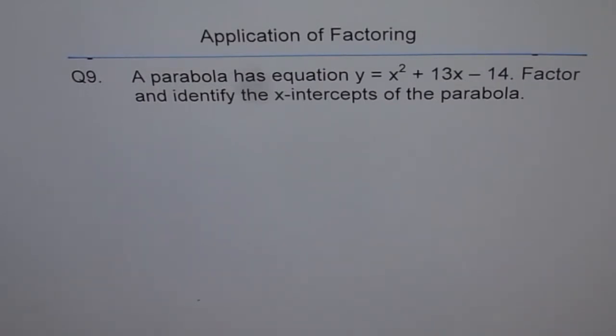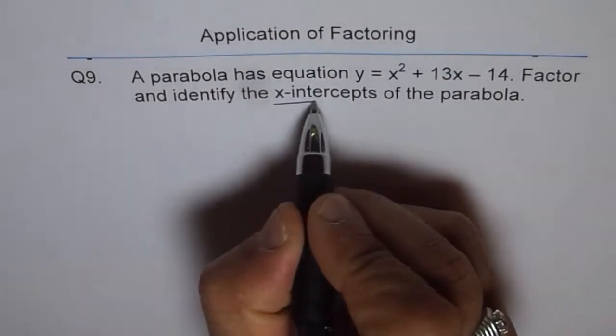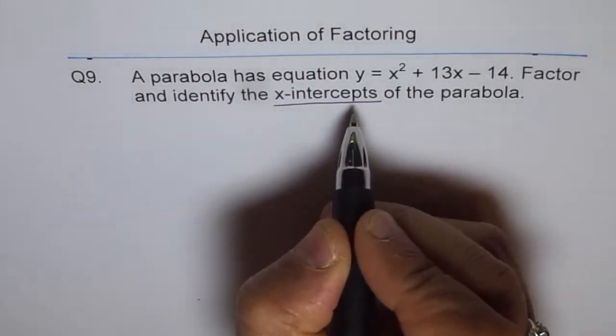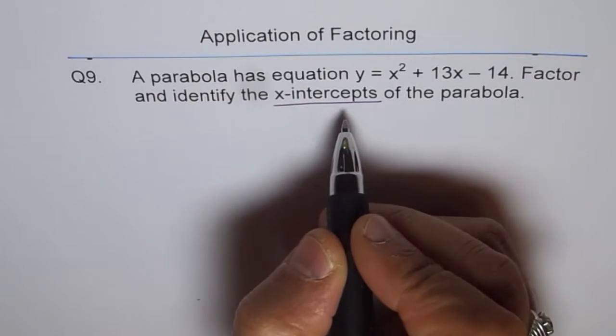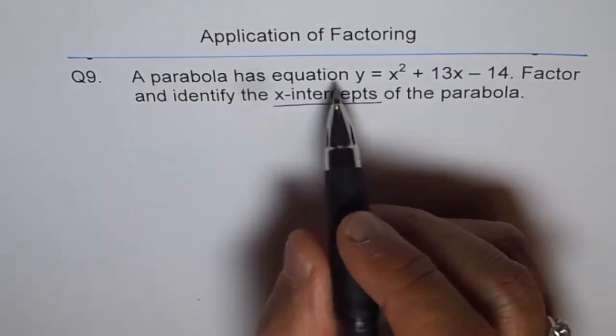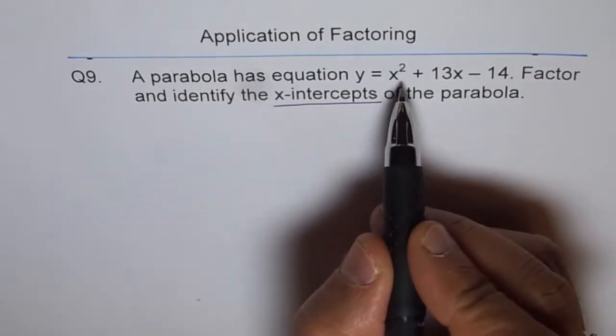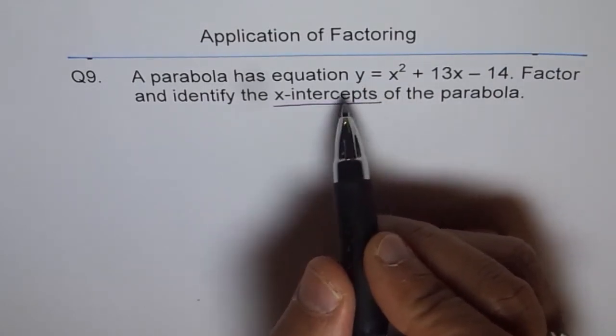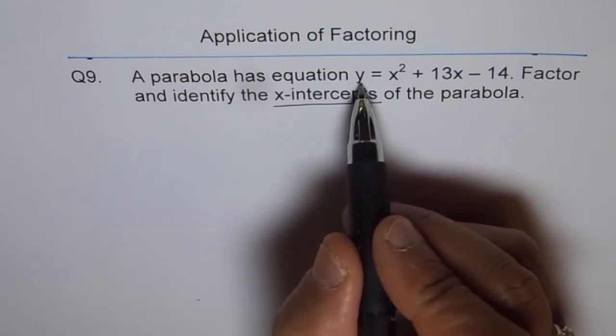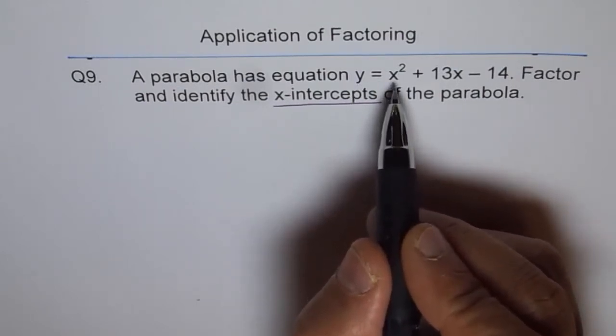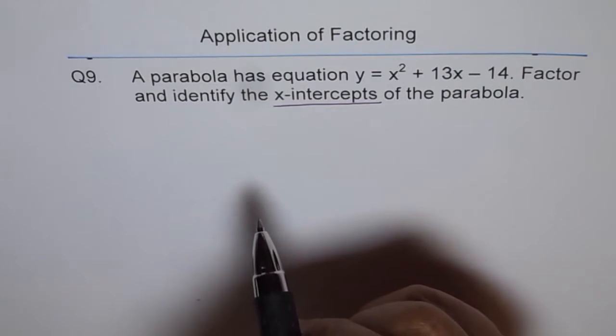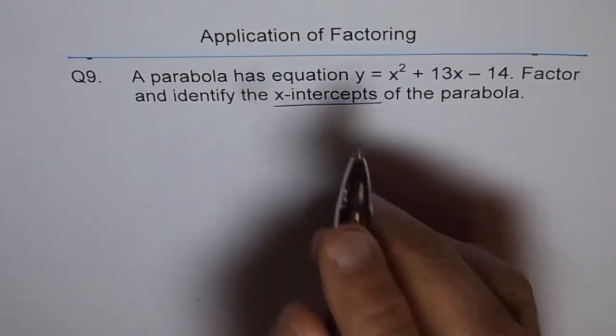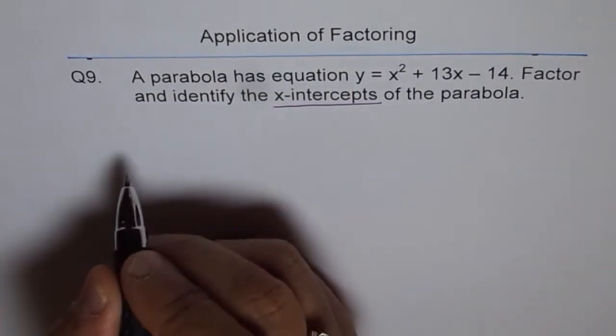First thing you should know is what is x-intercept. x-intercepts are the points where the graph of the parabola crosses the x-axis. At these points, the value of y should be 0. So we can equate y = 0 and find the value of x for which y is 0 to get the x-intercept. That is the approach we're going to follow.